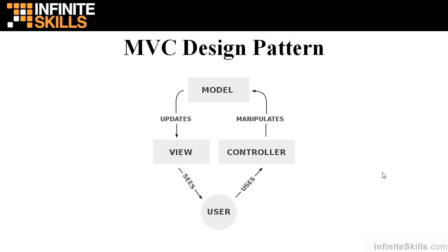This is the classic diagram of an MVC design pattern. The user sees a view and interacts with it in some way, and the user requests go into the controller, which calls the model data and manipulates it in some way, and creates an update to the model, which gets passed through to the view, and the user sees the new view.